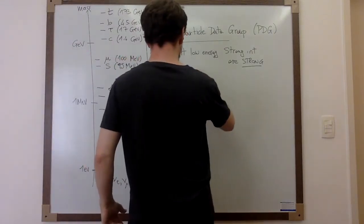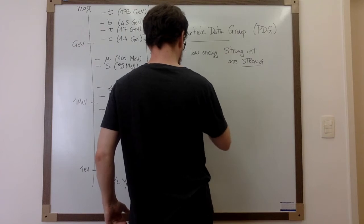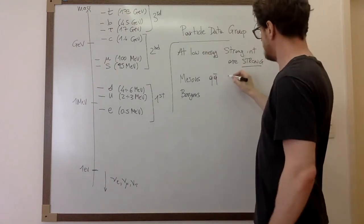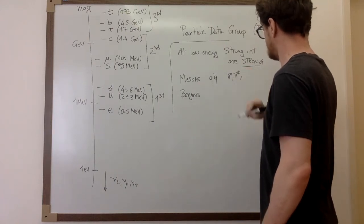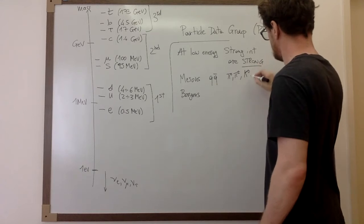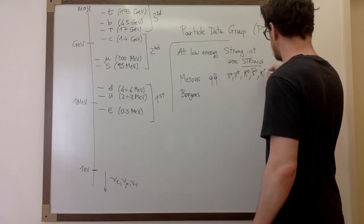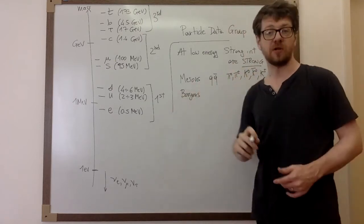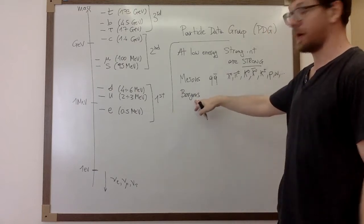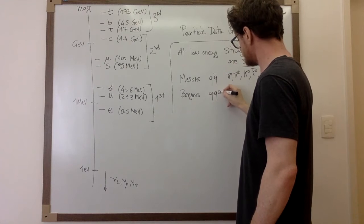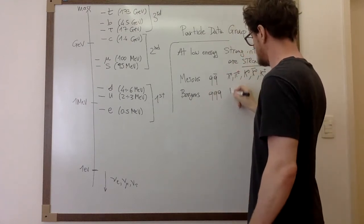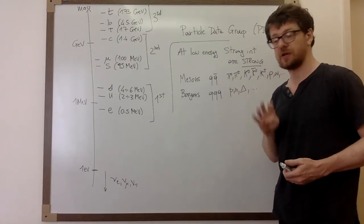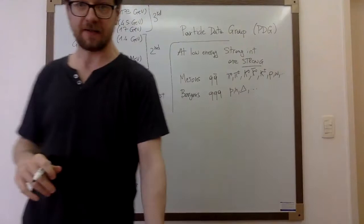The bound states are called mesons and baryons. Mesons are bound states of a quark and an antiquark — examples include pions (pi-zero, pi-plus/minus), kaons (K-zero, anti-K-zero, K-plus, K-minus), the rho, the omega, and so on. Baryons are bound states of three quarks. Examples include the proton and neutron. We'll describe all these objects in a couple of lectures.